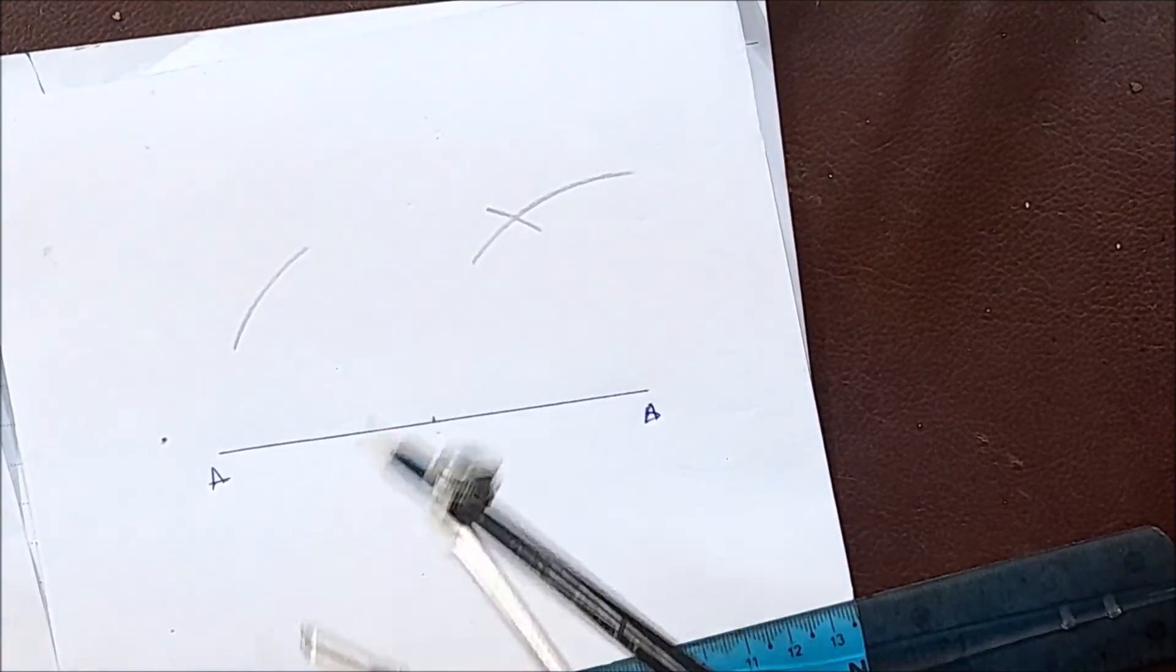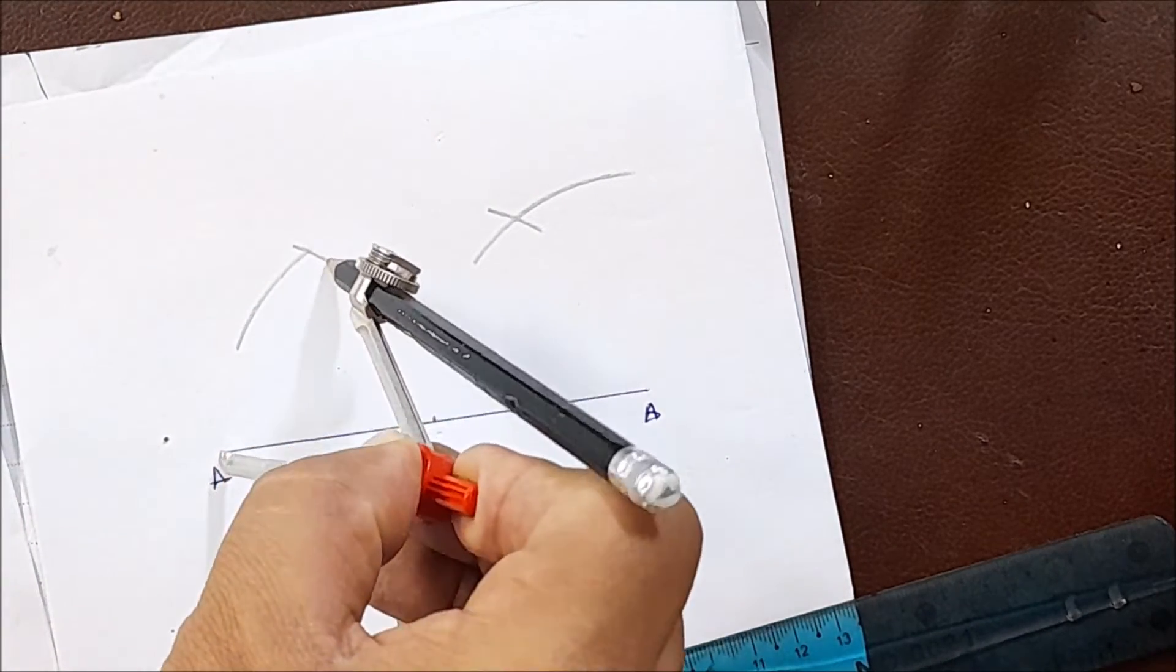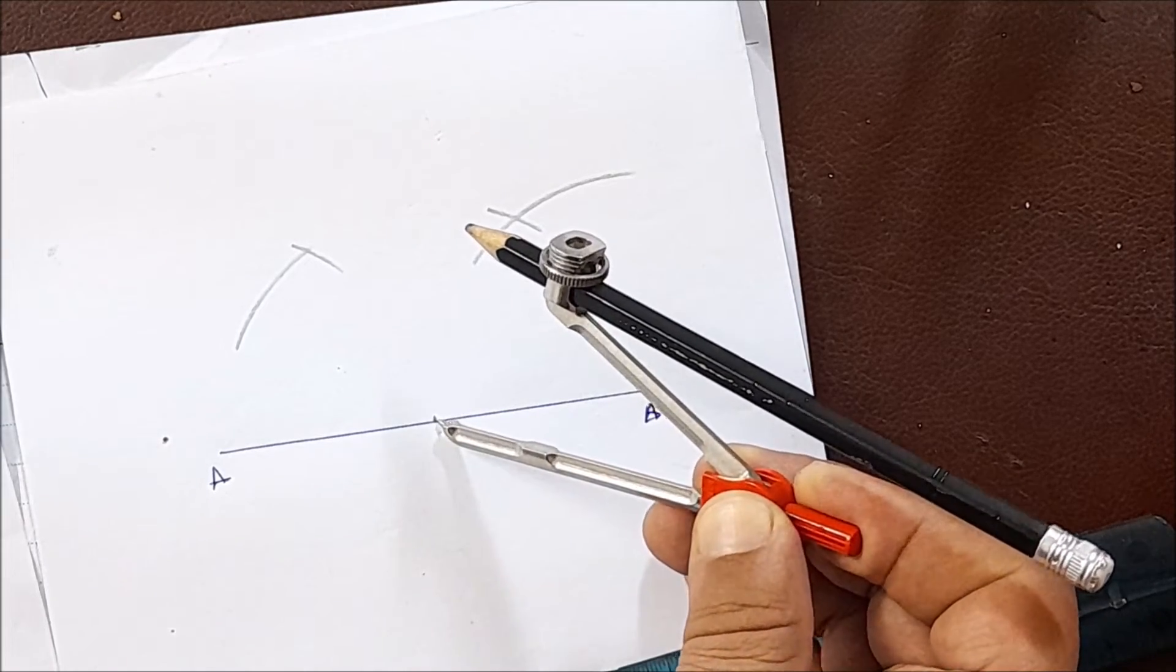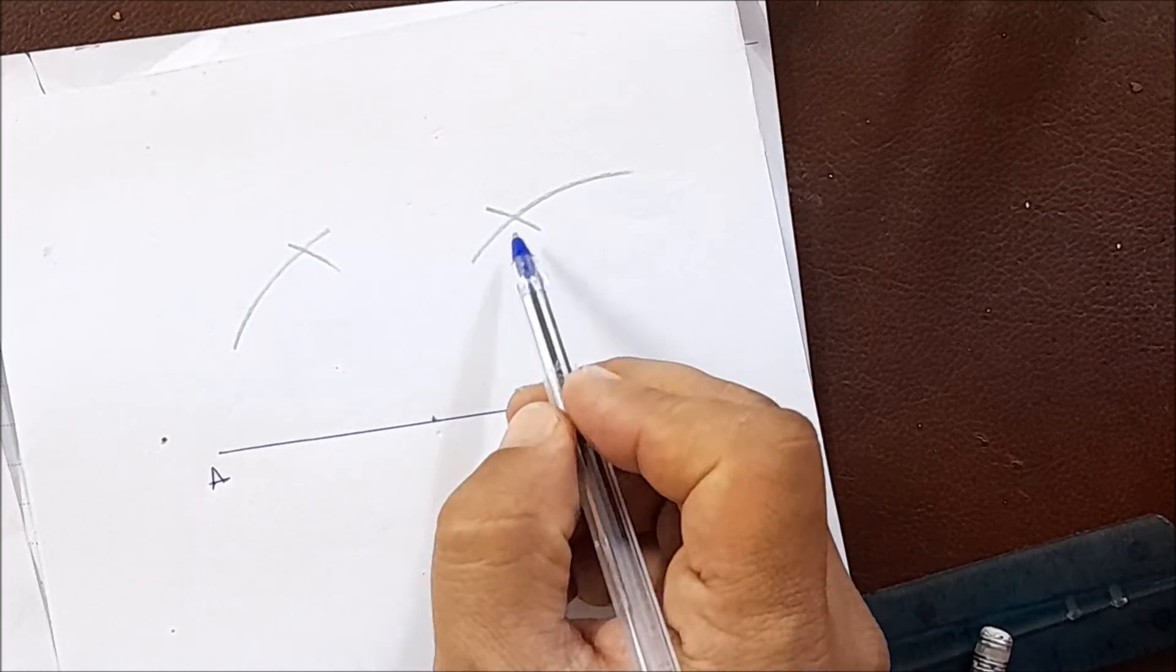Likewise, from the midpoint we'll scribe another arc here, and from point A we'll scribe another one. We got two vertices.